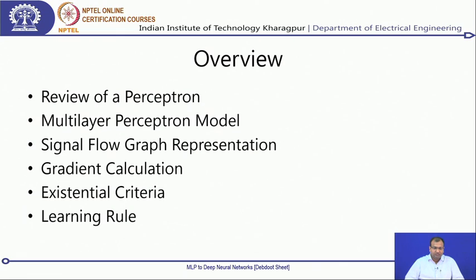Following that is a very important aspect about gradient calculation — what happens within these functions and whether the gradient is just for the classification cost function or whether it needs to exist throughout the network. That leads into something called the existential criteria for the network, and all other transformations and cost functions, to exist. Then we go to the learning rule.